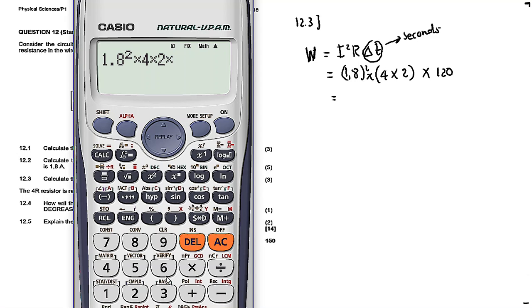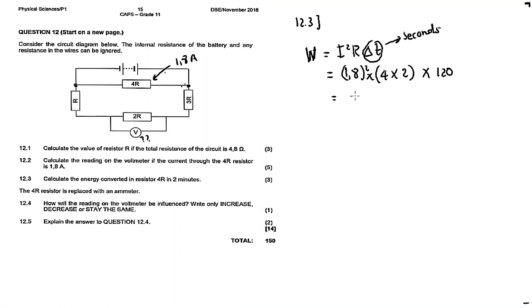The answer works out to approximately 3,110.4 joules for the energy converted in resistor 4R over two minutes.